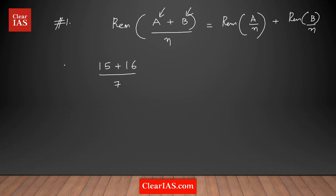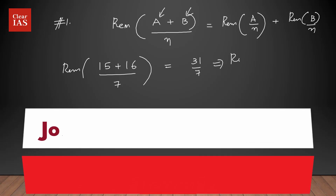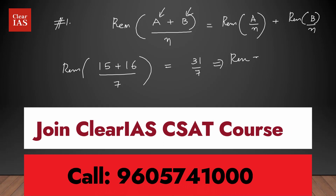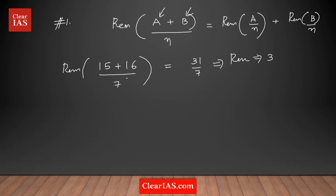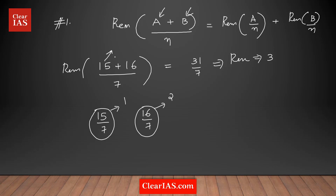One way: 15 + 16 = 31, divide by 7 — the remainder is 3 (since 7 × 4 = 28). Alternatively, divide each term individually: 15 ÷ 7 gives remainder 1, and 16 ÷ 7 gives remainder 2. Add the remainders: 1 + 2 = 3. Same answer. This is the rule of addition with respect to remainders.